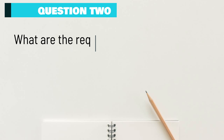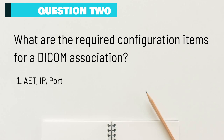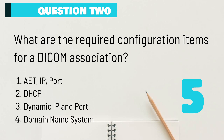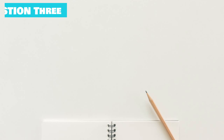Question 2: What are the required configuration items for a DICOM association? A. AE Title, IP, Port. B. DHCP. C. Dynamic IP and Port. D. Domain Name System. The correct answer is AE Title, IP, Port. The DICOM association requires that the Application Entity Title, IP, and Port are configured.